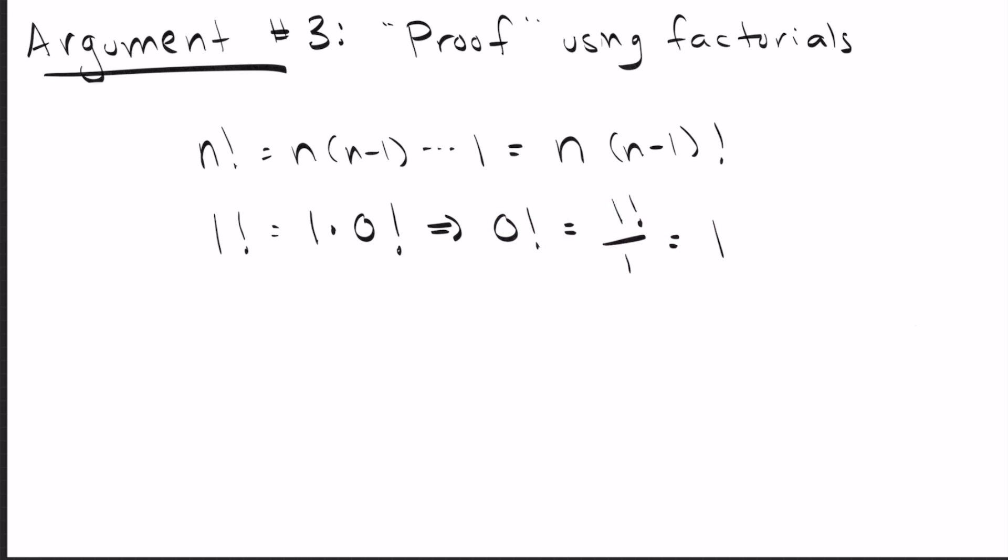But there's a big problem with this. It doesn't actually follow the rule above. The rule above works as long as n is greater than one. And let's see that. So if we take the rule above and we apply it literally, one factorial equals one.